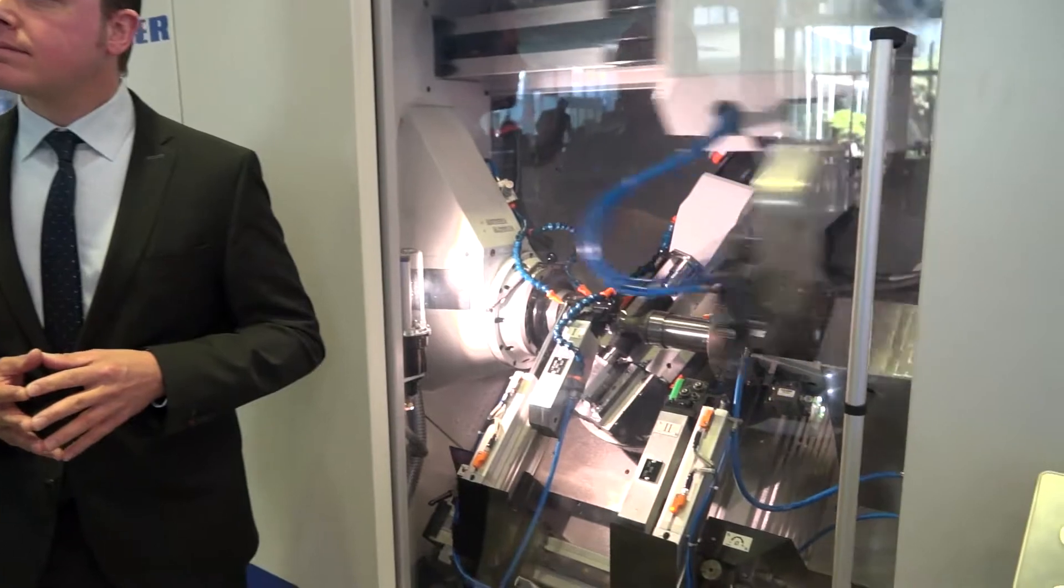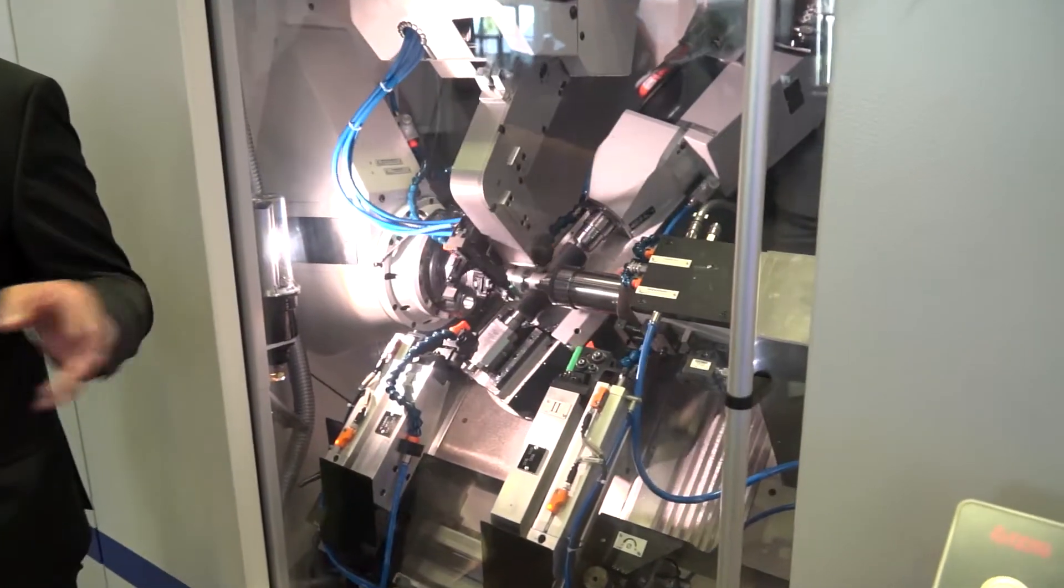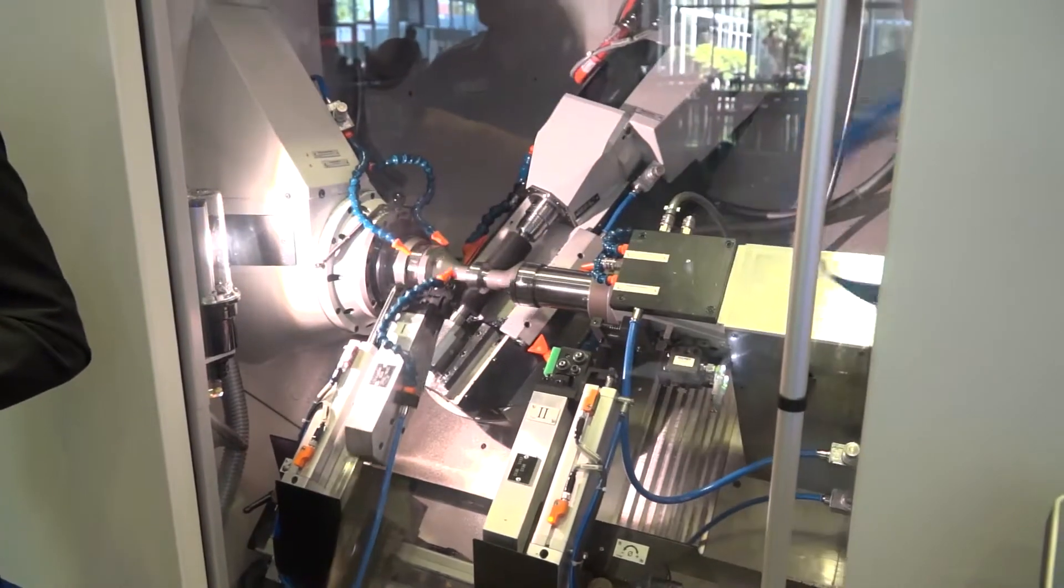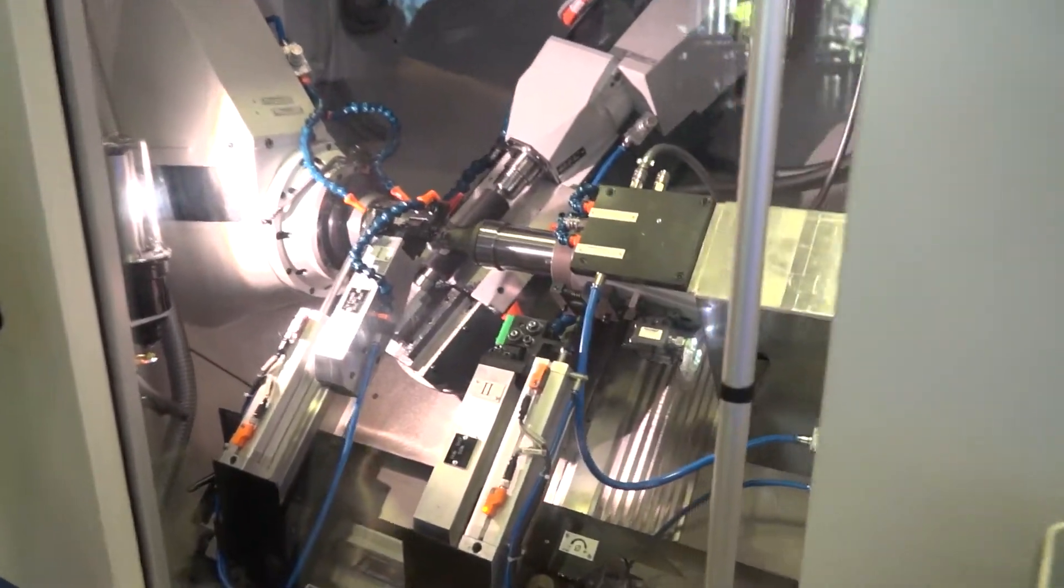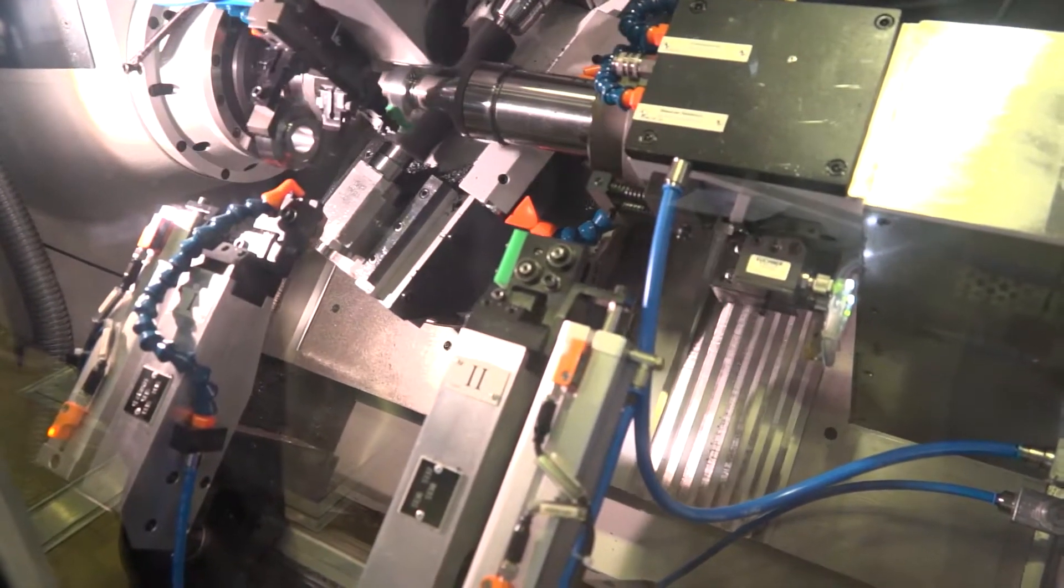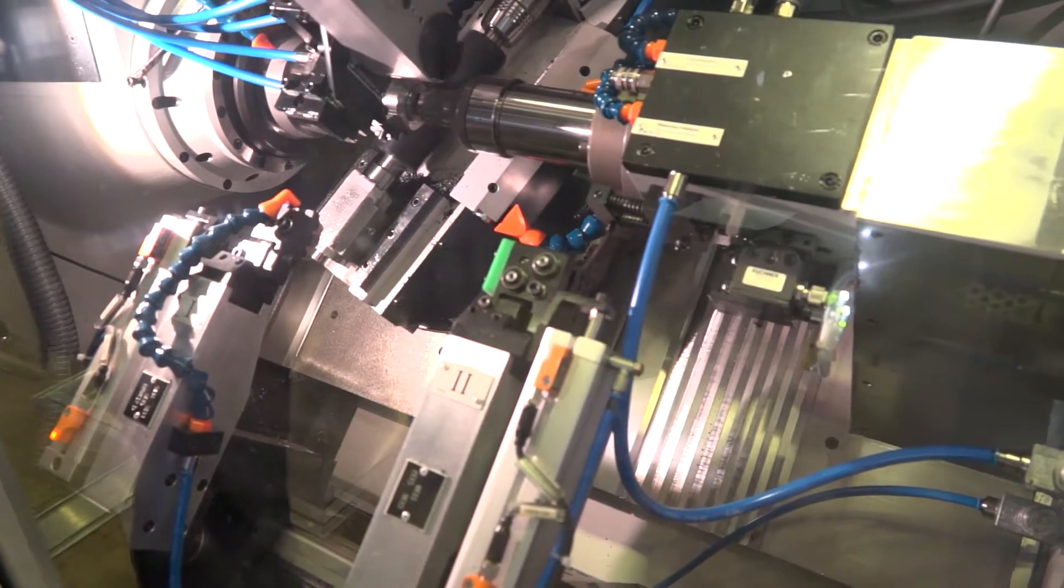And I noticed we've got two auxiliary stations. Are they configurable? What options do you have? Well, what you see here is two auxiliary slides, auxiliary tools, and we can assemble various tools to these auxiliary tools. Here, for example, you see a deburring disc that helps us to remove the burr on the face side of the gear.